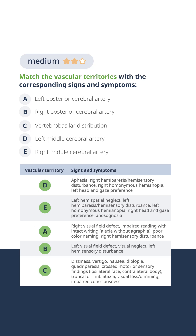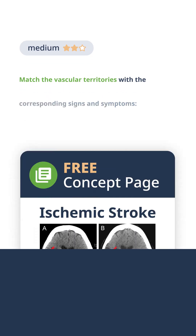Vertebral strokes have a distribution that is deep within the brainstem in the medullary region, and so we see dizziness, vertigo, nausea, and quadriparesis that are present in medullary strokes.